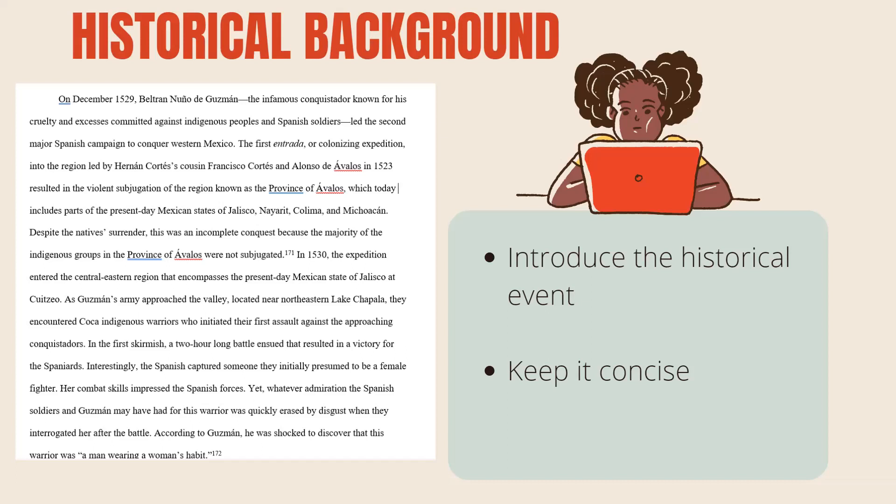The point of providing historical background and historical context is to give the reader a brief introduction to what historical events you are covering. This is important because you don't want to assume your reader already knows about the historical events in question. My tip for this section: do not make it too long. Try to keep it concise — personally, I would say no more than one to two pages, perhaps no more than five paragraphs. That said, this might vary depending on your professors.